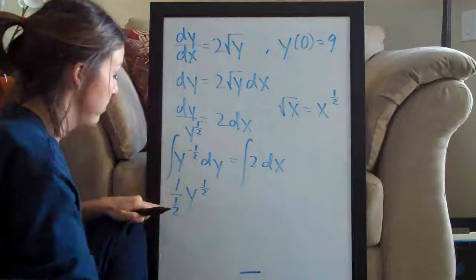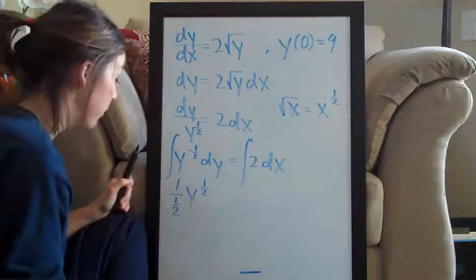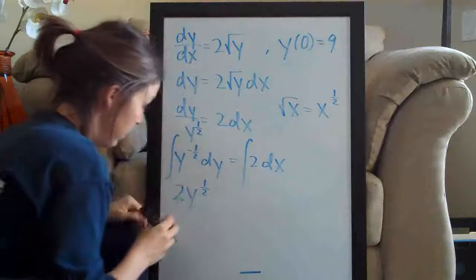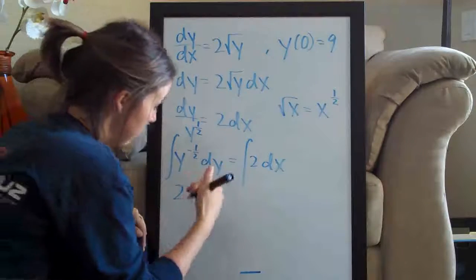Of course, one divided by one half is two. So we can simplify that right now and write two. So this is the integral of the left side. We're done there.